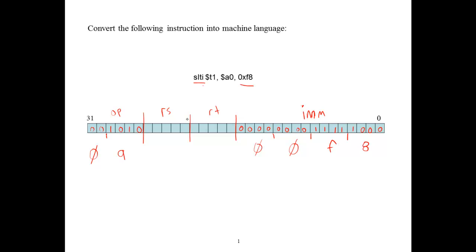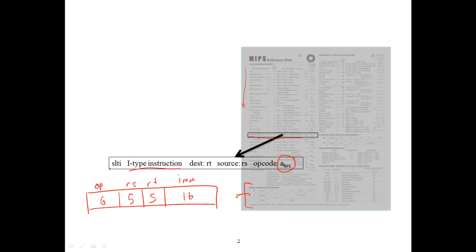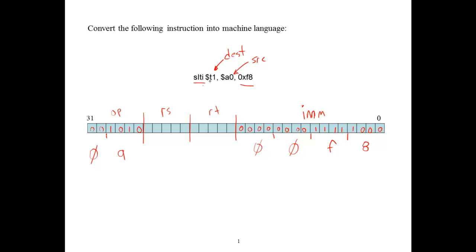Now we need to encode the register specifiers. We have two register specifiers, T1 and A0. We know from writing MIPS that T1 is our destination because it's specified first, and A0 is going to be a source. We need to understand the mapping of the destination and source to RS and RT. The data associated with the set if less than instruction tells us that our destination register is going to specify RT and the source is going to be put in RS. So our destination register T1 is going to be RT, and RS is going to be A0.